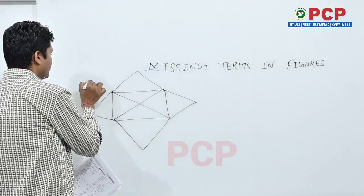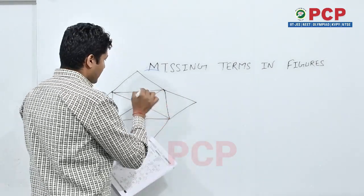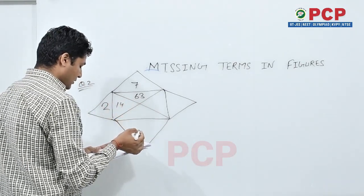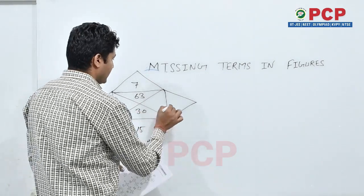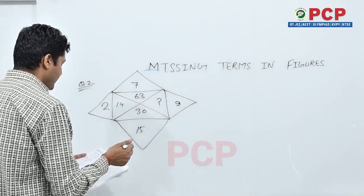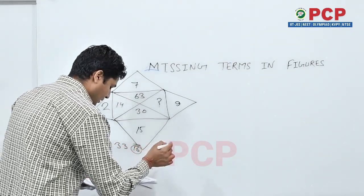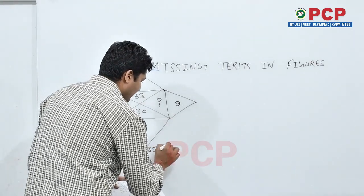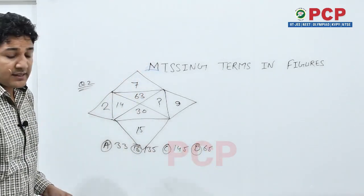Question number 2. 63, 7, 2, 14, 30, 15, 9 and question mark. Option is A 33, option B 135, option C 144 and option D 65. See the question.